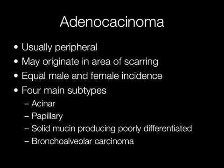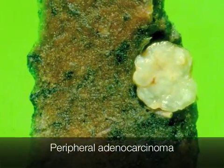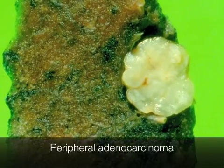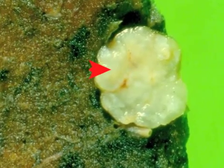Adenocarcinomas are usually peripherally situated. They may originate in an area of scarring. There is an equal male and female incidence. The four main subtypes are acinar, papillary, solid mucin-producing poorly differentiated adenocarcinomas, and bronchoalveolar carcinoma.